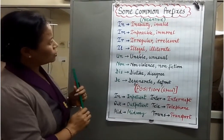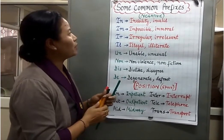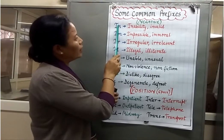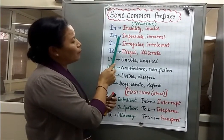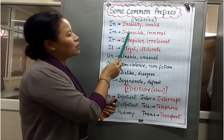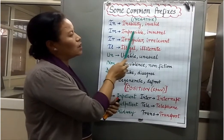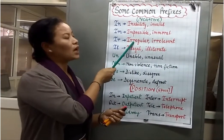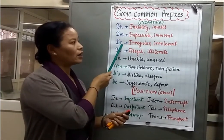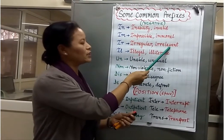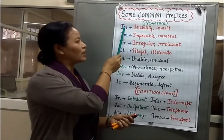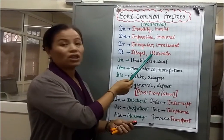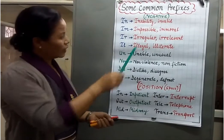What you need to remember is that 'in' is changed into 'im' when we have words starting with P or M — so 'impossible,' 'immoral.' When a word begins with R, 'in' changes into 'ir' — for example, 'irregular,' 'irrelevant.' And when it begins with L, 'in' changes into 'il' — for example, 'illegal,' 'illiterate.' So these are the negative prefixes.